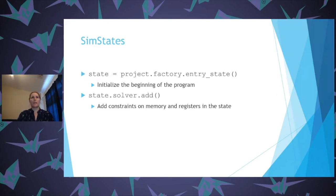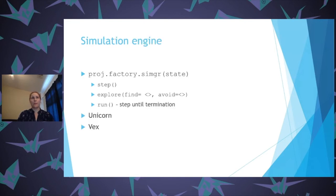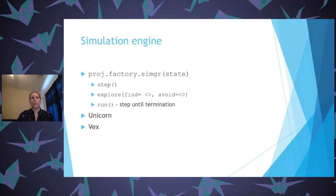After creating your project, you create an entry state to begin execution — that's the beginning of your program. To that first state you can add constraints on memory and registers. The simulation manager is passed the state you want to explore, with several options: 'step' advances one basic block at a time; 'explore' takes a find address or equation and optionally an avoid address; or you can call 'run' to execute until termination. Unicorn and VEX are both available as execution engines.